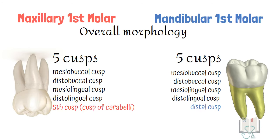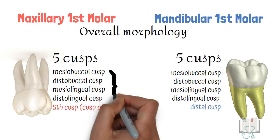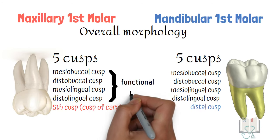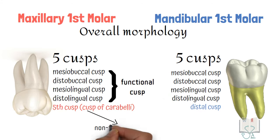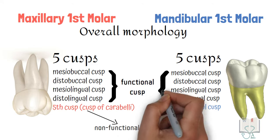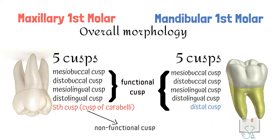Though in maxillary first molar there are four functional cusps and one non-functional cusp. On the other hand, in mandibular first molar, all five cusps are functional.